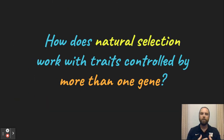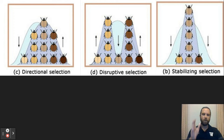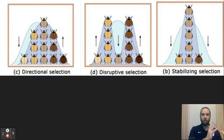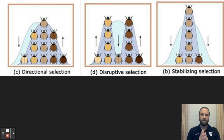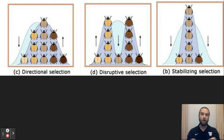So how does natural selection work with traits controlled by more than one gene? We look at a few different types of selection using beetles of five different colors. A normal bell curve shows few at the extremes and most in the middle. Directional selection is when one extreme gets chosen for and the bell curve shifts. Disruptive selection is when the middle — the mean — does not get chosen for and the extremes are selected for due to some environmental pressure. Stabilizing selection is when the bell curve gets very narrow and only the middle trait is chosen for, with the extremes left out.